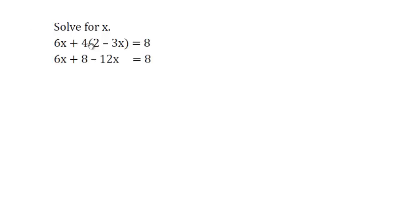The first thing we want to do is distribute the 4 throughout the parentheses. 4 times 2 is 8 and 4 times negative 3x is negative 12x.